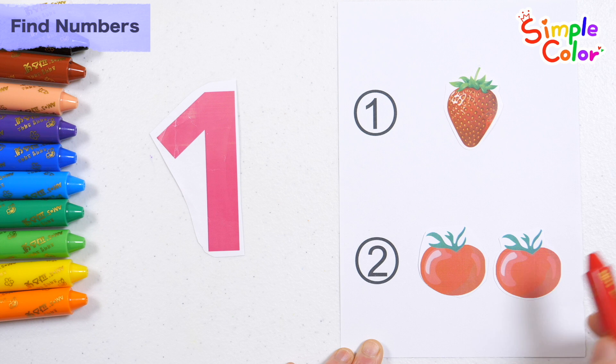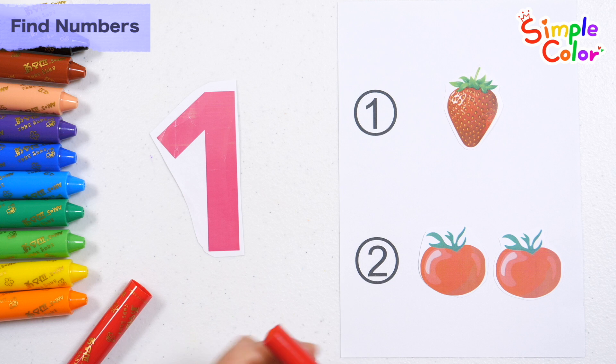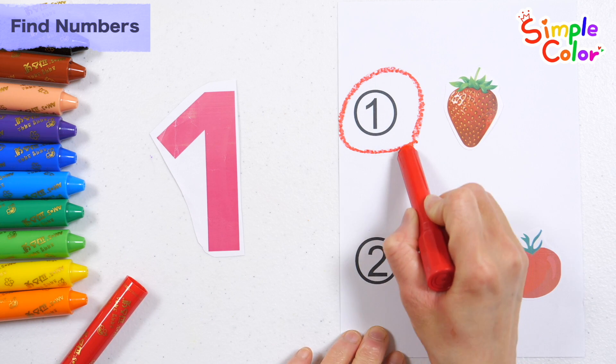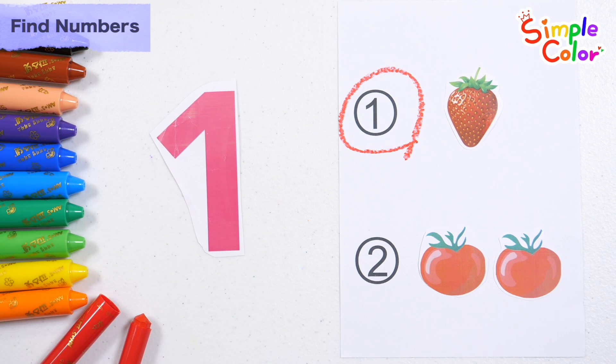Let's find the same number in the picture on the right. One. One. Two. E-I-E-I-O. That's right! One strawberry! Great job!